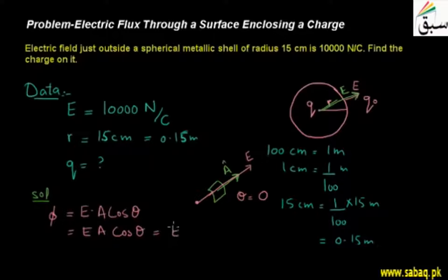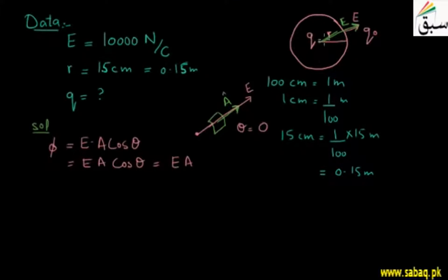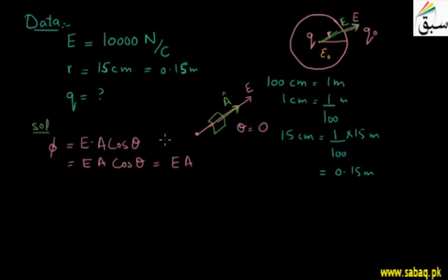Since cos(theta) = cos(0) = 1, we have phi₁ = E × A. Now, we know that for a closed surface like a metallic shell enclosing charge Q, by Gauss's Law, the electric flux is phi₂ = (1/ε₀) × Q, where ε₀ is the permittivity of free space — representing how much the medium permits electric field lines to pass through.